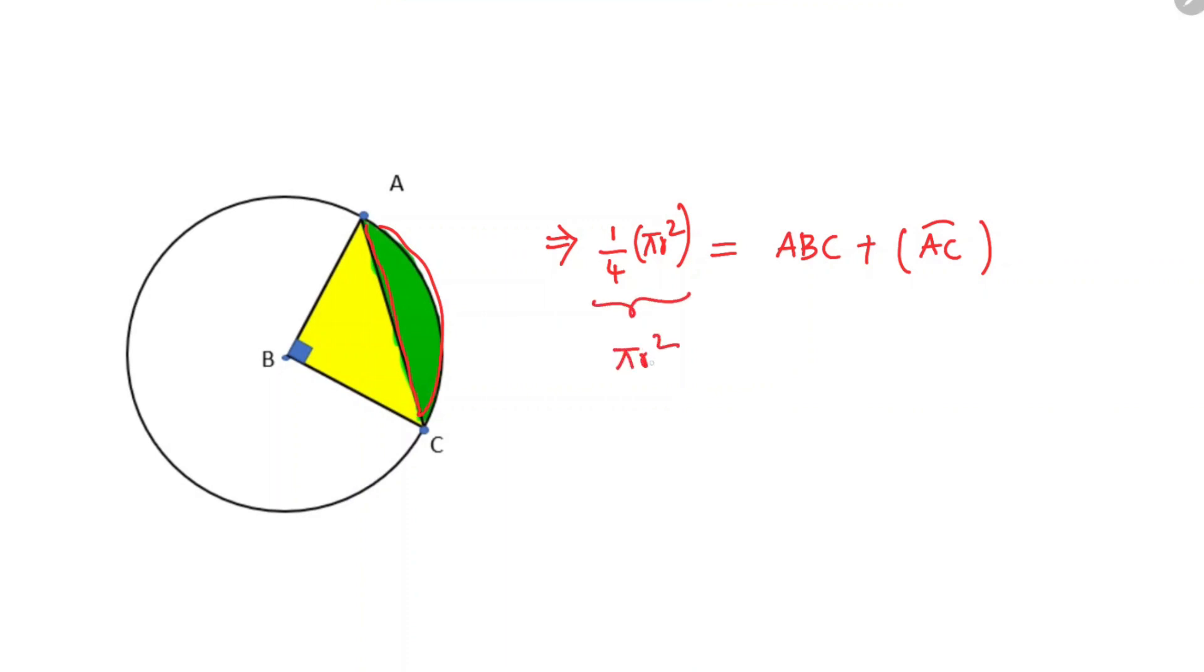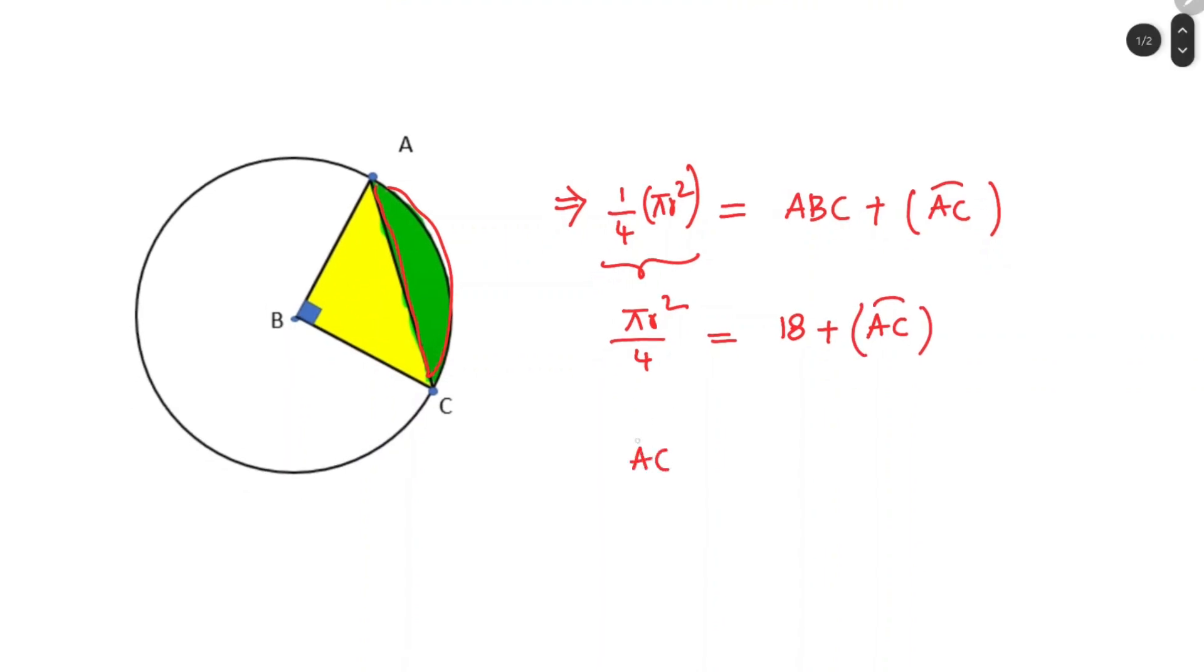This becomes πr²/4 is equal to ABC which is 18 plus the area of segment AC. So AC will be equal to πr²/4 minus 18.